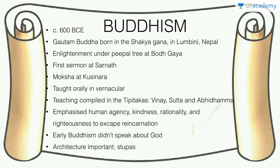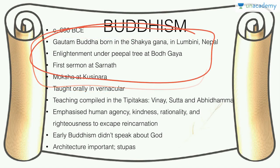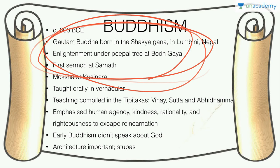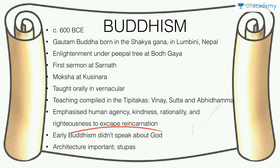Buddhism was founded around 600 BCE by Gautam Buddha, of the Shakya clan — one of the Mahajanapadas — born in Lumbini, Nepal. He was enlightened under the Bodhi tree at Bodh Gaya, gave his first sermon at Sarnath, and attained Moksha at Kushinagar. Please remember these four locations. He taught orally in vernacular Prakrit, unlike Brahmanism which was restricted to Sanskrit speakers. His teachings are compiled in the Tripitakas — Vinayapitaka, Suttapitaka, and Abhidhamampitaka. He emphasized human agency, kindness, rationality, and righteous action to escape the cycle of reincarnation. Early Buddhism did not emphasize God.